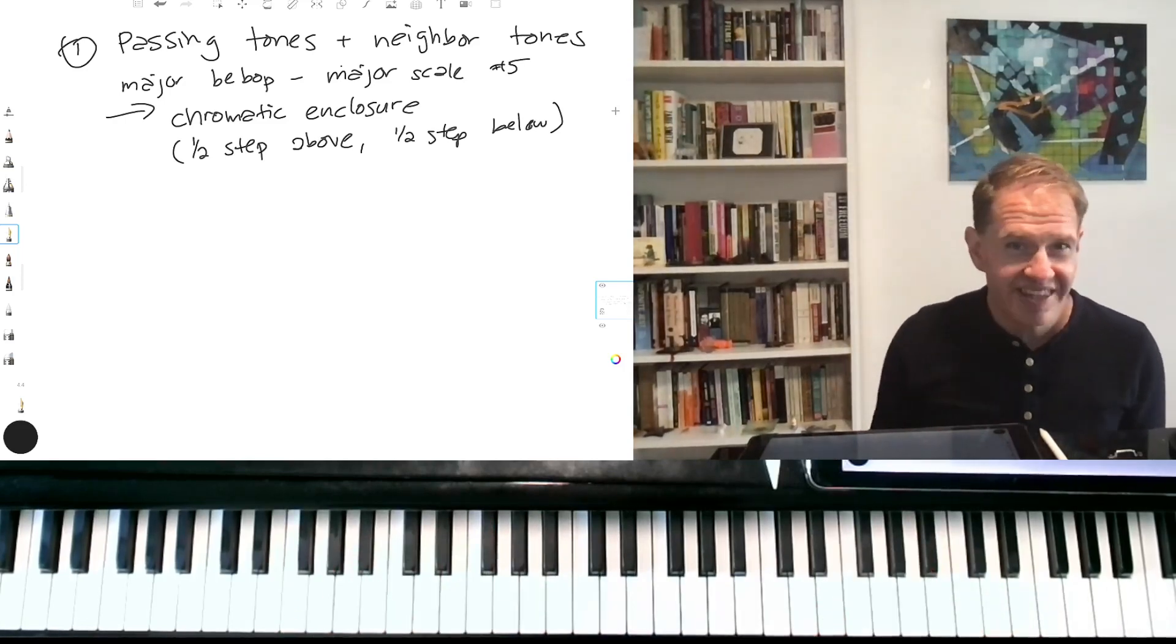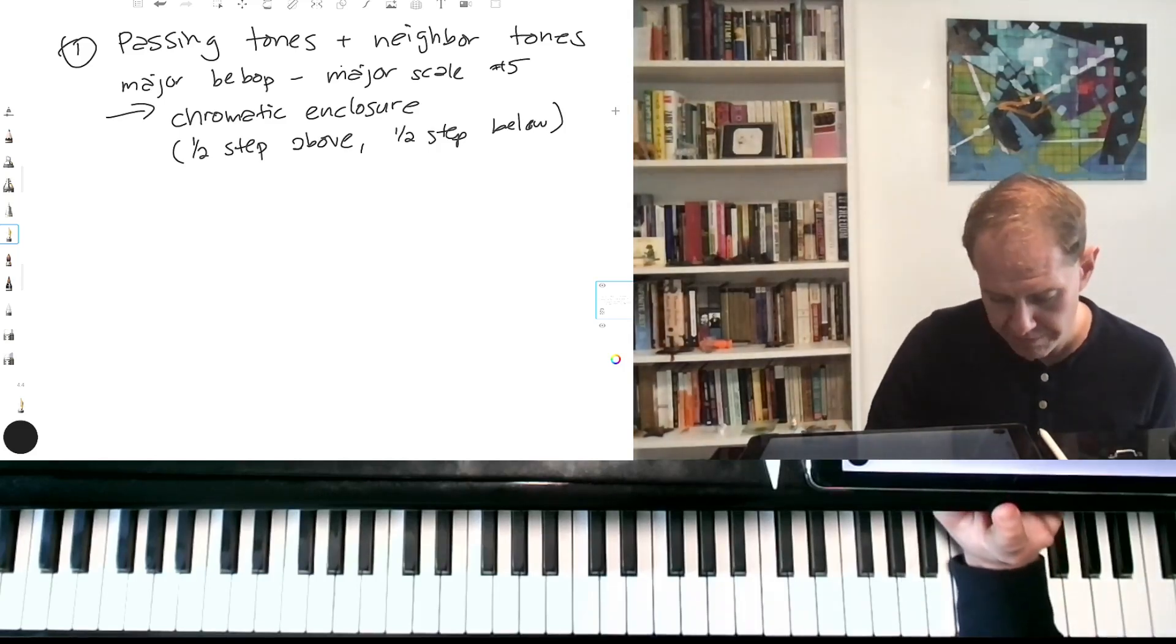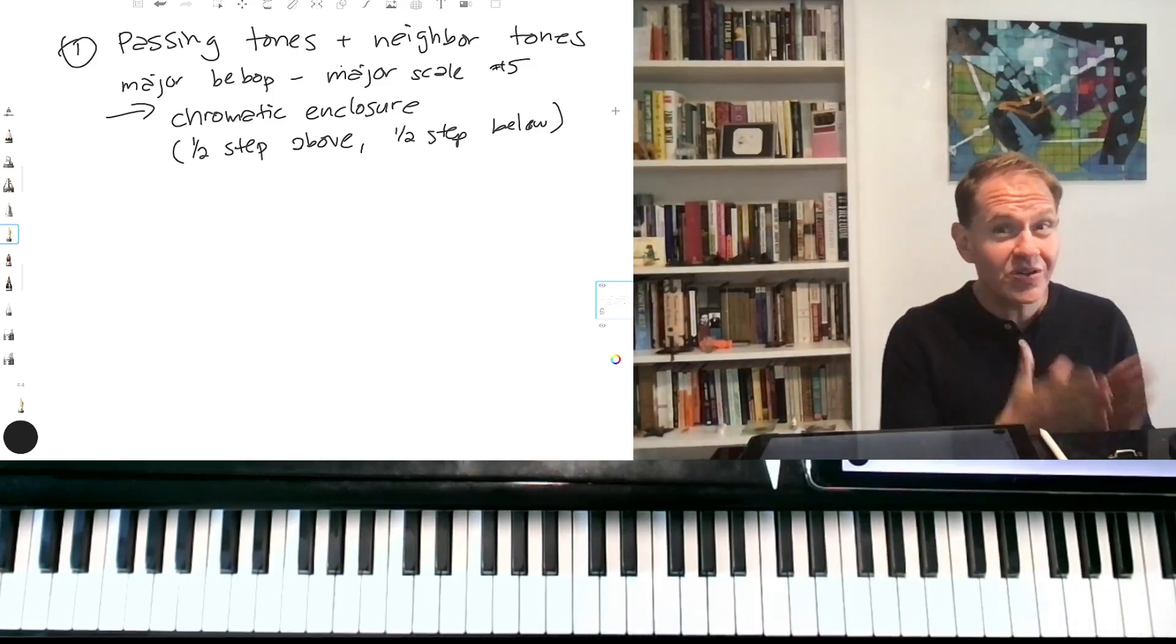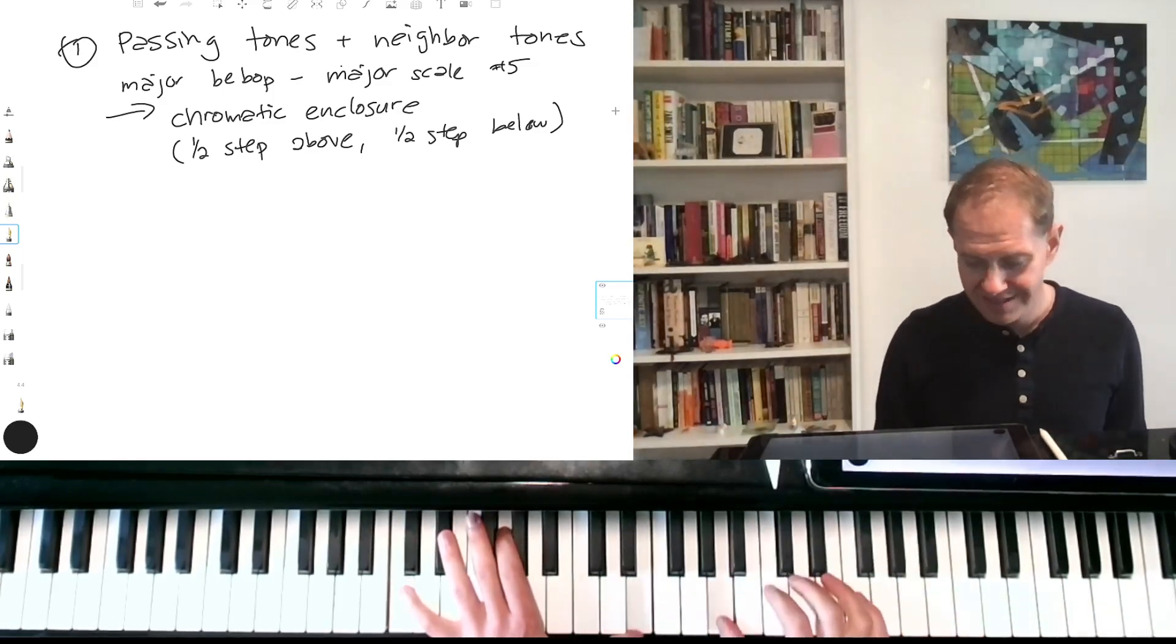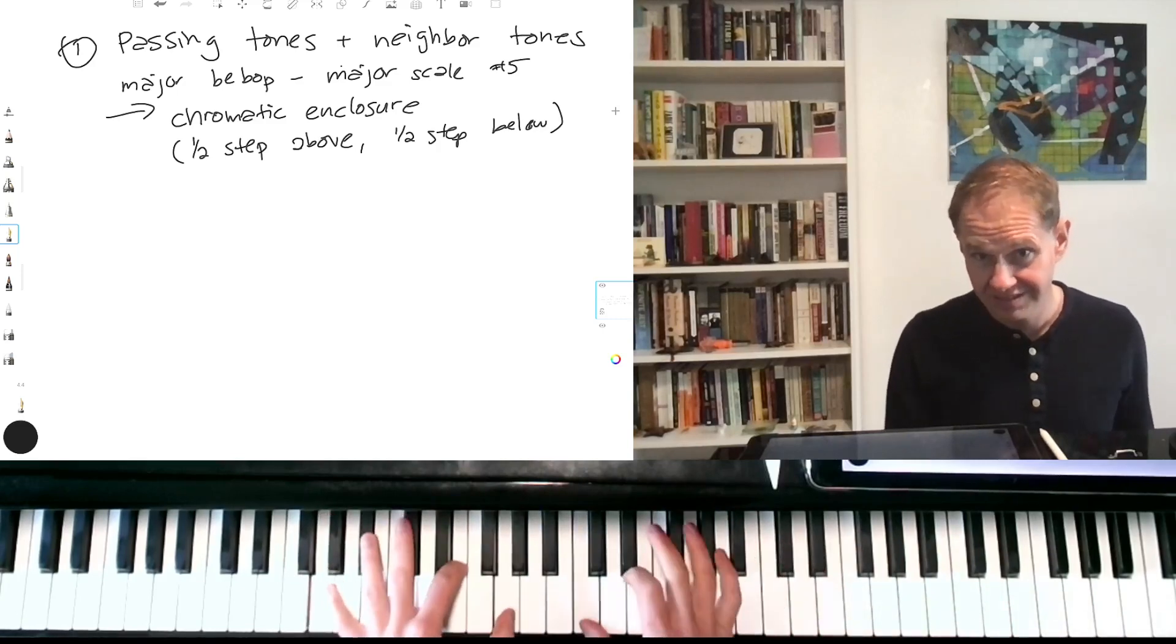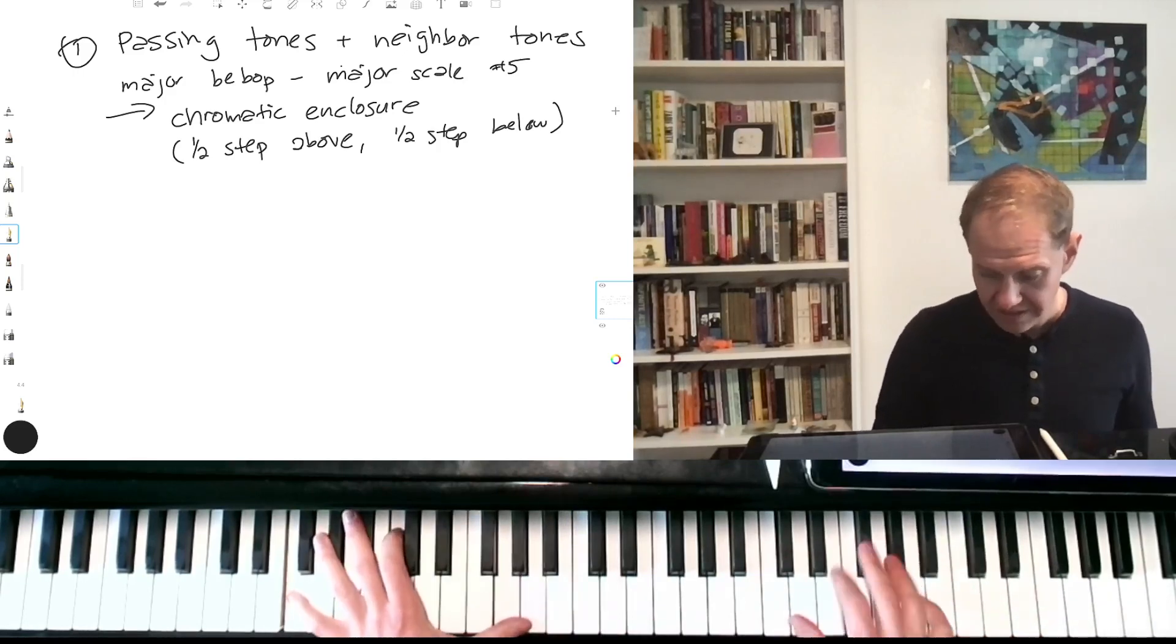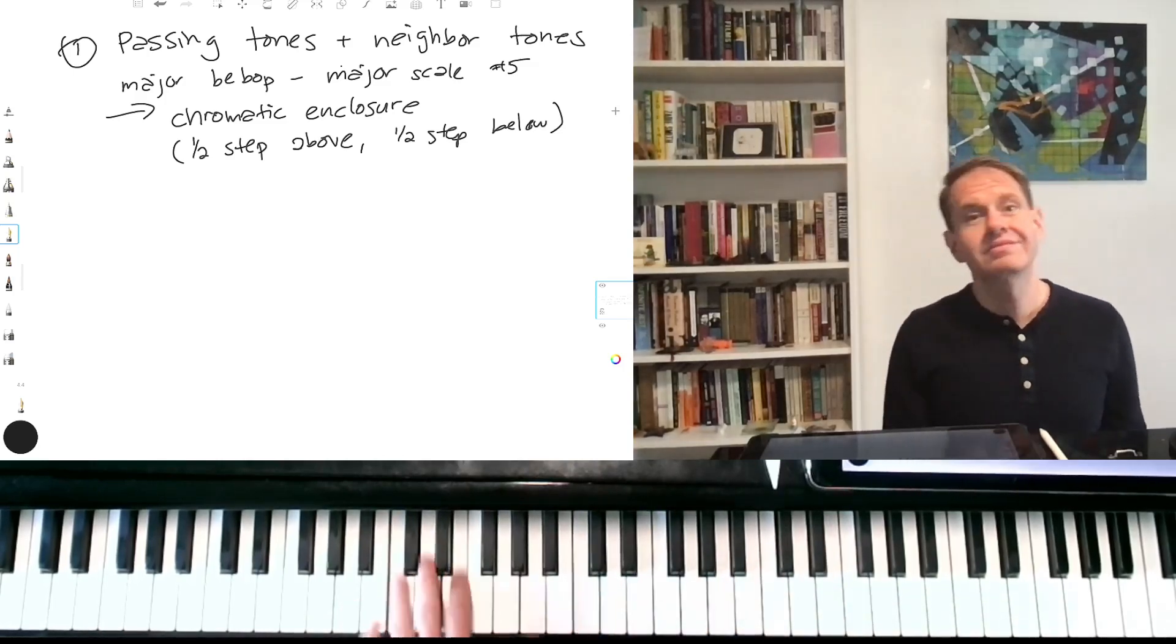Now when I do these enclosures, and I think I've talked about this on the channel before, the important thing is you want to land on that main tone, the target tone. If you get there too early, or you get to the target tone kind of not on a stronger beat, then it gets very confusing as to which is the main tone you're aiming for and which are the neighbor tones.